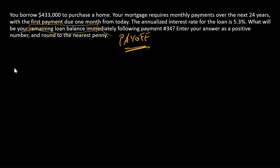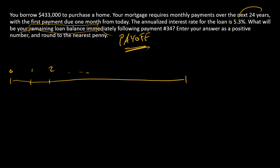This is a multi-step problem, and the first step is just calculating what the monthly loan payment is. So let's go back to the very beginning and think about what's going on with this loan. We've got 24 years of monthly payments, so the total number of payments is going to be 24 times 12, which is 288 payments.